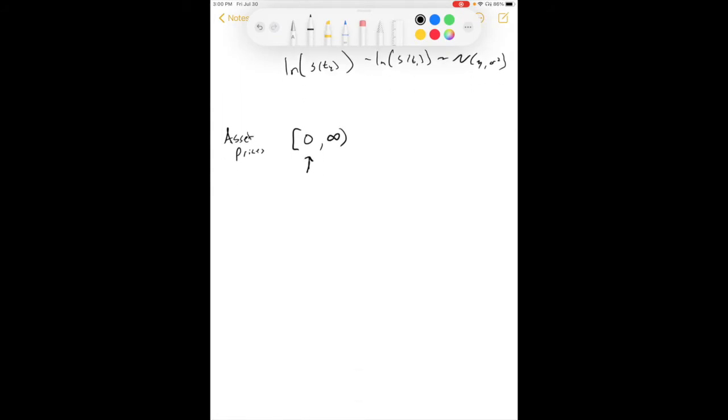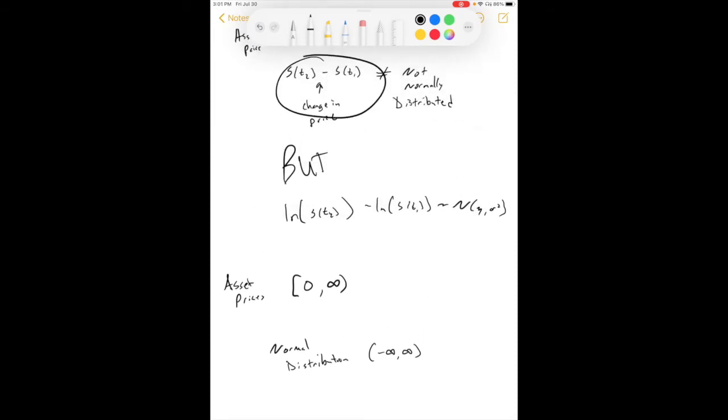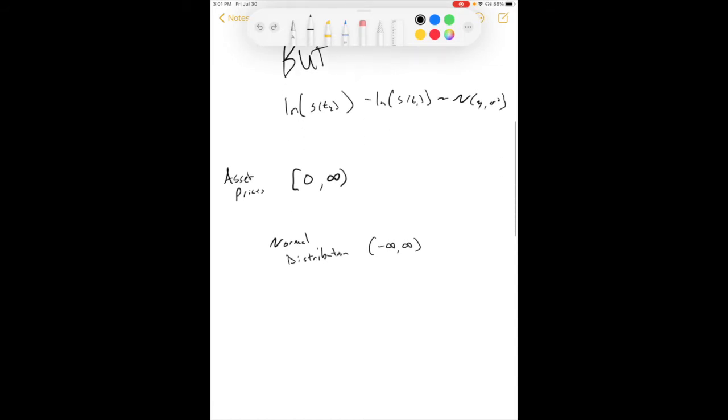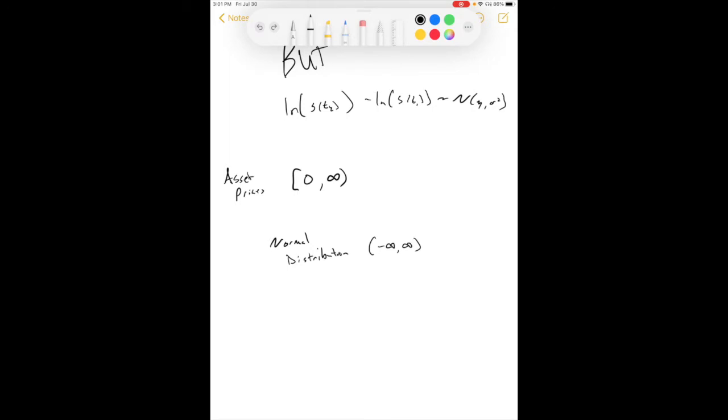So, since asset prices can't be negative, having a normally distributed difference in prices doesn't make a lot of sense because a normal distribution is defined from negative infinity to positive infinity. So if we had normally distributed change in asset prices, then we could theoretically get negative asset prices. And we don't want that.